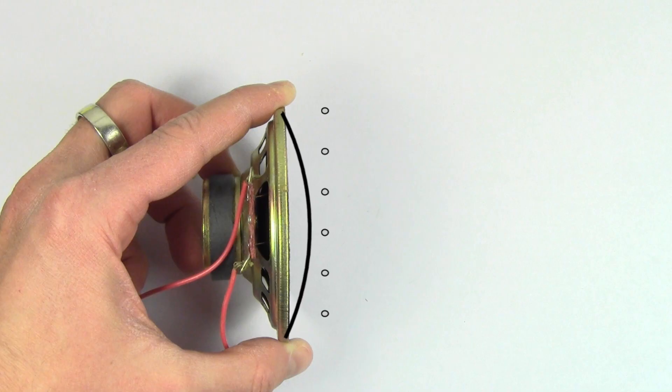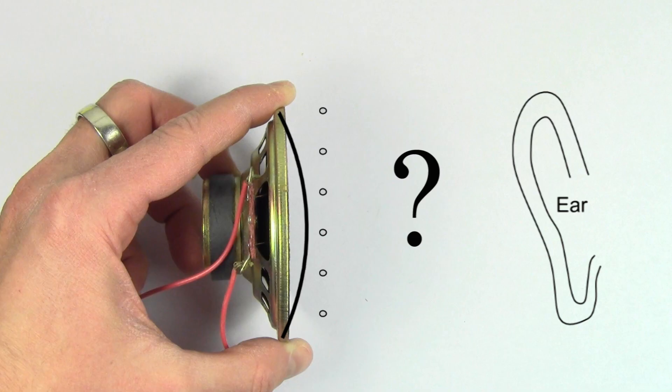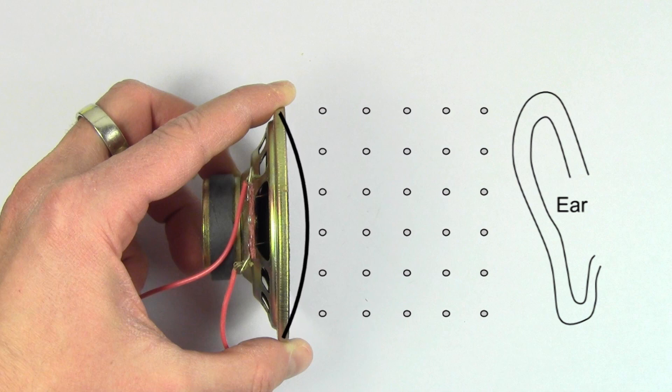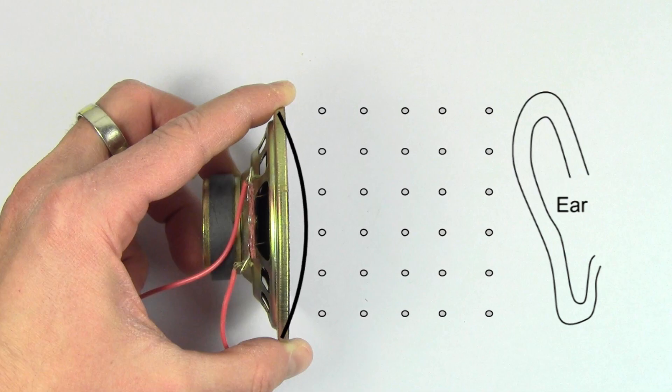So how can you hear the sound from a speaker if the air next to the speaker doesn't actually make it to your ear? Well, the reason is that the oscillating air in front of the speaker causes the air in front of it to also oscillate. This causes the air in front of that air to start oscillating, which causes the air in front of it to start to oscillate, until finally the air that's actually next to your ear and your eardrum start to oscillate back and forth.